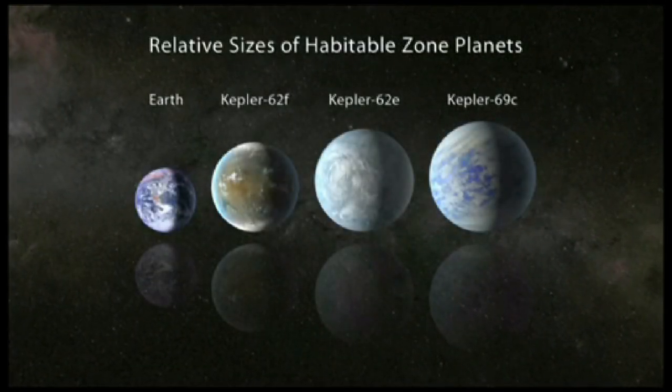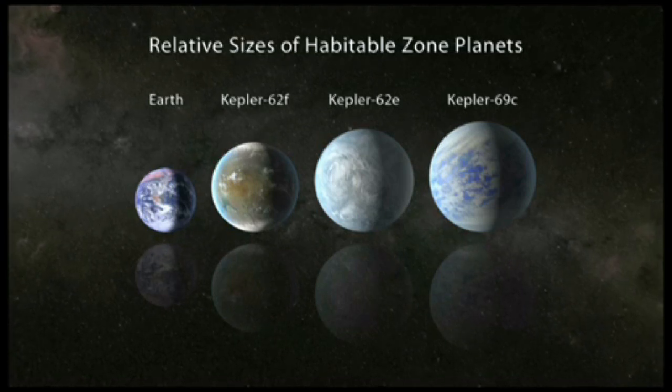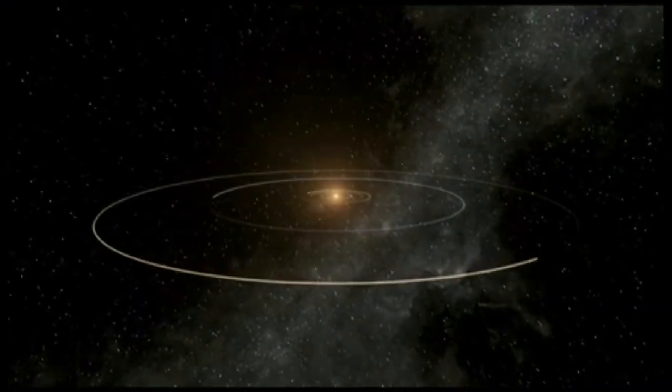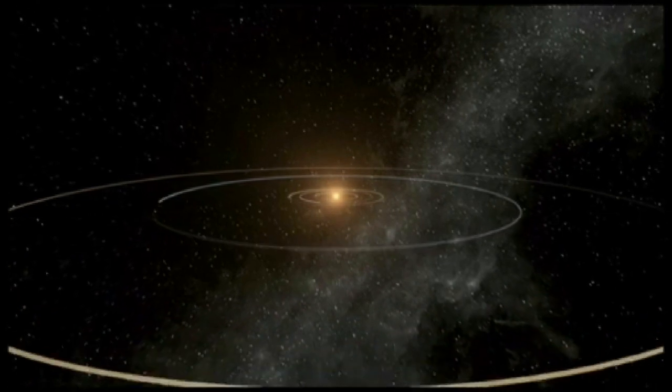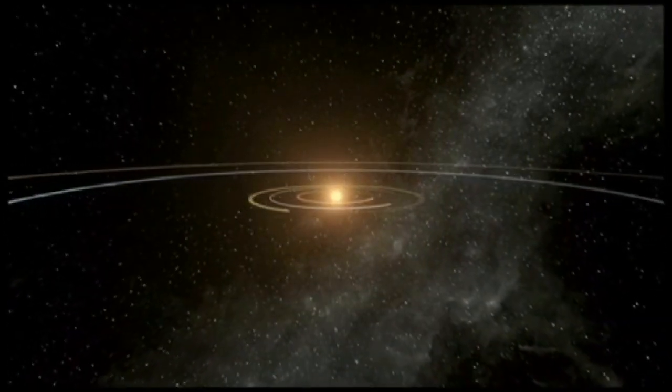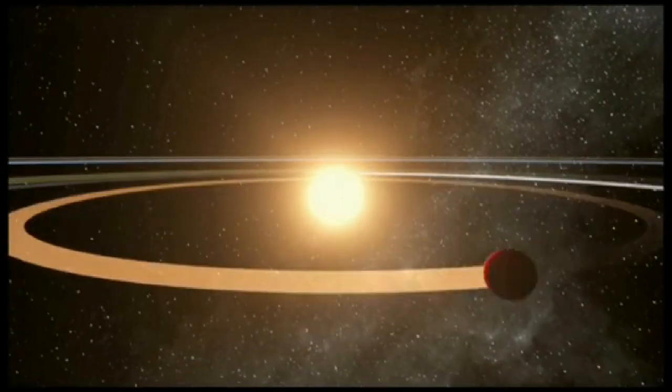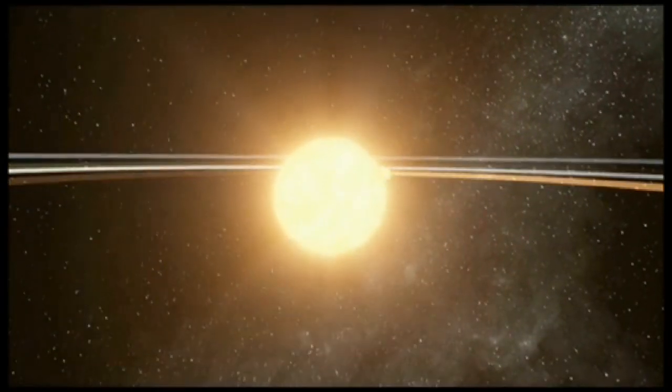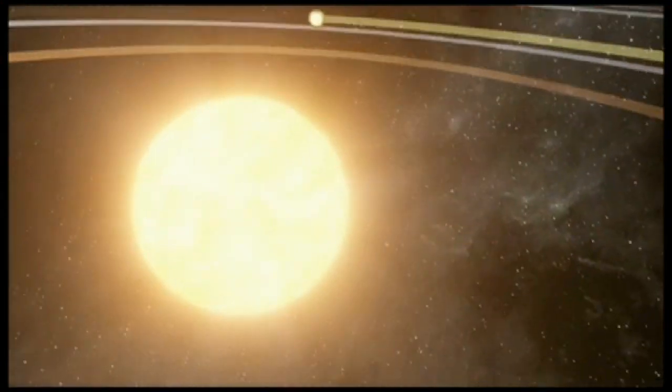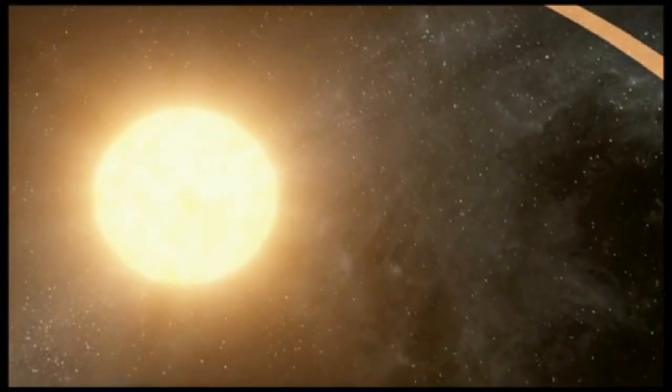Each of the three new planets is less than twice the size of Earth. About 360 light-years from Earth, two of the newly discovered planets are in a five-planet system called Kepler 62. The host star is smaller and cooler than our Sun and has three planets that orbit very close, making them hot, inhospitable worlds.